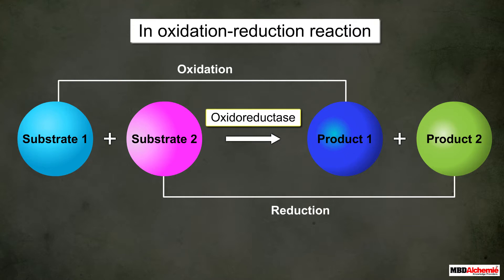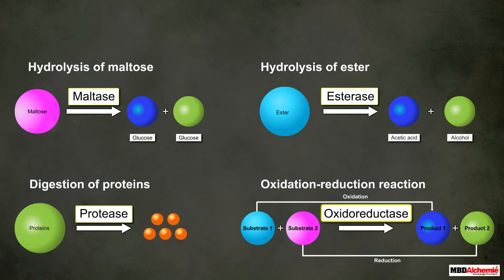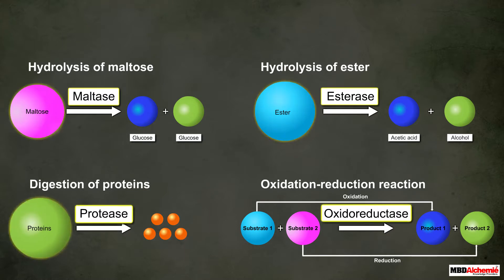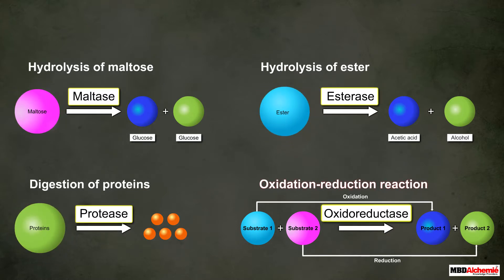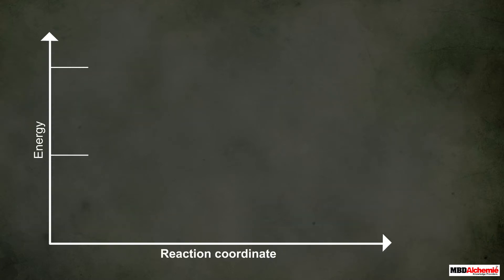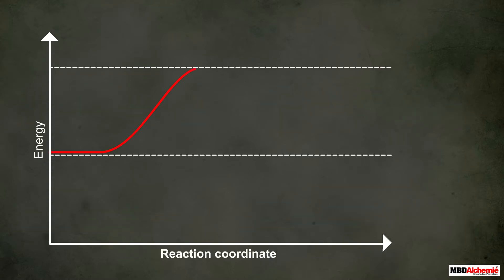You may have observed that in all the cases discussed, the names of the enzymes end with '-ase'. This '-ase' is added as a suffix either to the name of the substrate or to the name of the reaction in which the enzyme works.